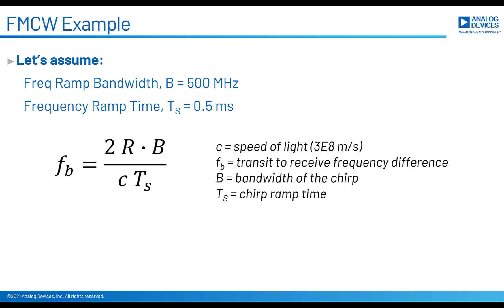So let's go through a quick example now. Say our ramp bandwidth was 500 megahertz and our chirp width was 500 microseconds. Then we can use those equations to show that we will need a beat frequency of 6.7 kilohertz per meter of range. So for every meter away that the target is, we should see an additional frequency shift of 6.7 kilohertz.